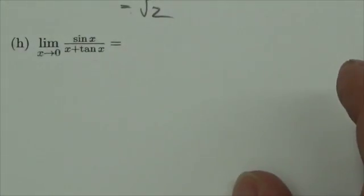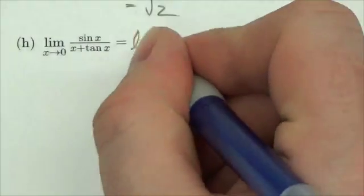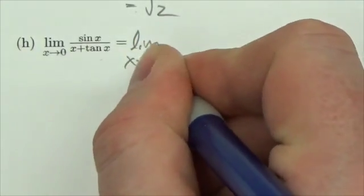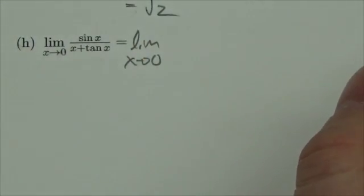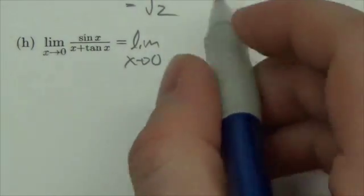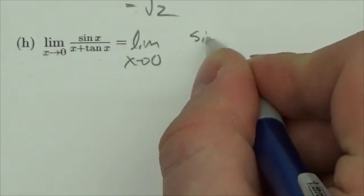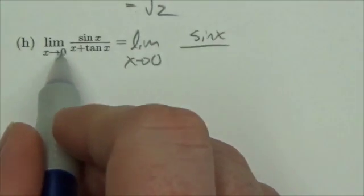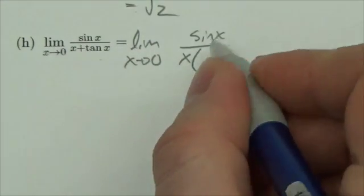One of the things you can do in math and calculus in particular is if it doesn't do what you want it to do, sometimes you can make it do what you want it to do. By that I mean I can factor an x out of the denominator and that'll get me 1 plus the tangent of x over x.